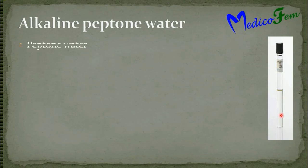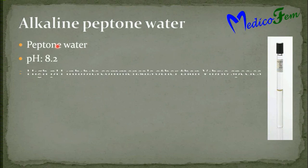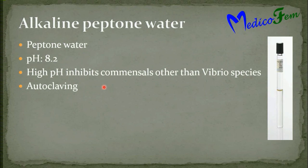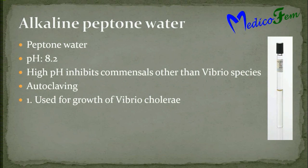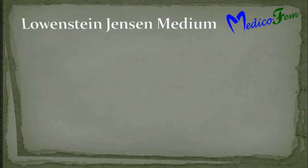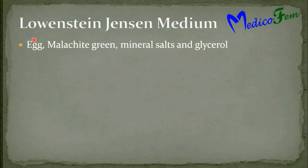Alkaline peptone water contains peptone water with a pH of 8.2. The high pH inhibits the commensals of the intestine other than Vibrio. It is sterilized by autoclaving and is used for transport and growth of Vibrio cholerae. This is the alkaline peptone water.